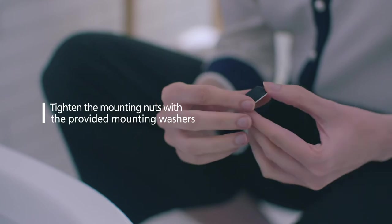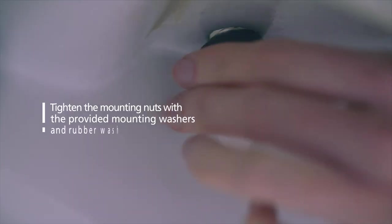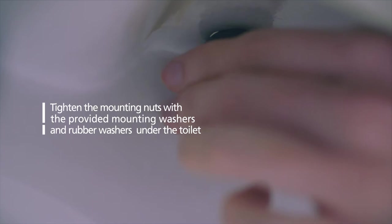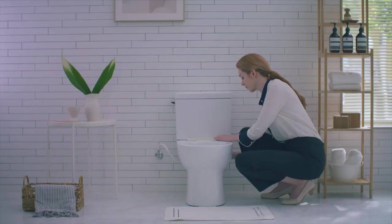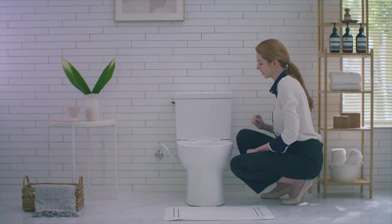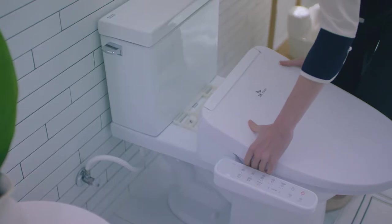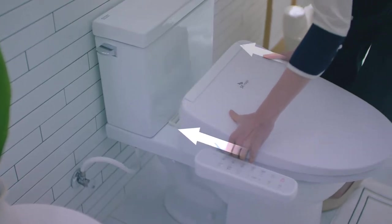Tighten the mounting nuts with the provided mounting washers and rubber washers under the toilet so that the mounting plate doesn't move. Depending on the type of the toilet, the width may vary. Make sure to fit it in the appropriate position. Match the center of the mounting plate with the center of the bidet seat and place the bidet seat on the toilet bowl.